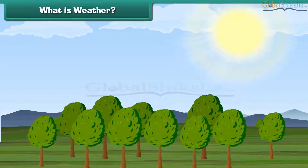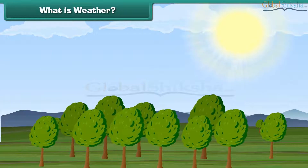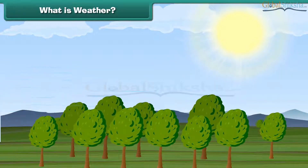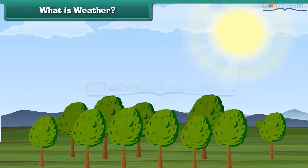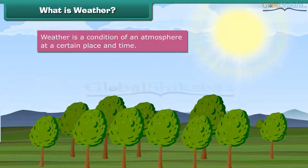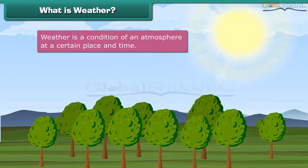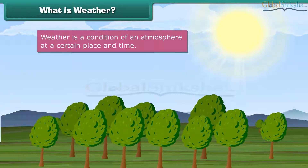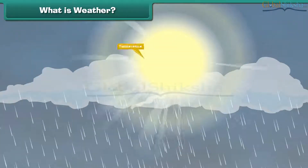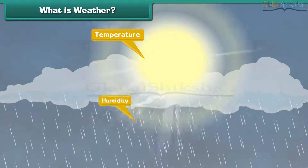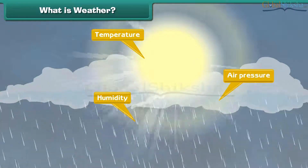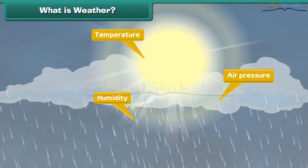Did you check today's weather forecast? What is this weather? Basically, weather is a condition of an atmosphere at a certain place and time. The weather depends on many factors such as temperature, humidity, and air pressure. Let us learn about these factors.